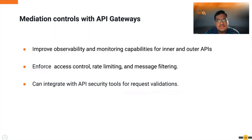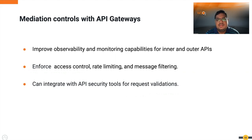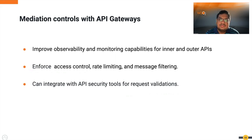Another essential for API security is using API gateways for mediation control. API mediation provides improved visibility, accelerated delivery, increased operational flexibility, and improved enforcement capability. Organizations commonly achieve mediation by deploying API gateways and micro-gateways functioning as reverse or forward proxies. Using API gateways, you can achieve improved observability and monitoring, easily enforce access control, rate limiting, and message filtering, and integrate with API security tools for request validation.